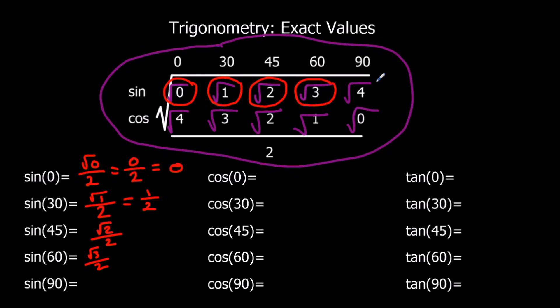And sin 90, I've got root 4 over 2. Now, square root 4 is actually 2. So that's 2 over 2, and 2 divided by 2 is actually 1. We can simplify that to 1.